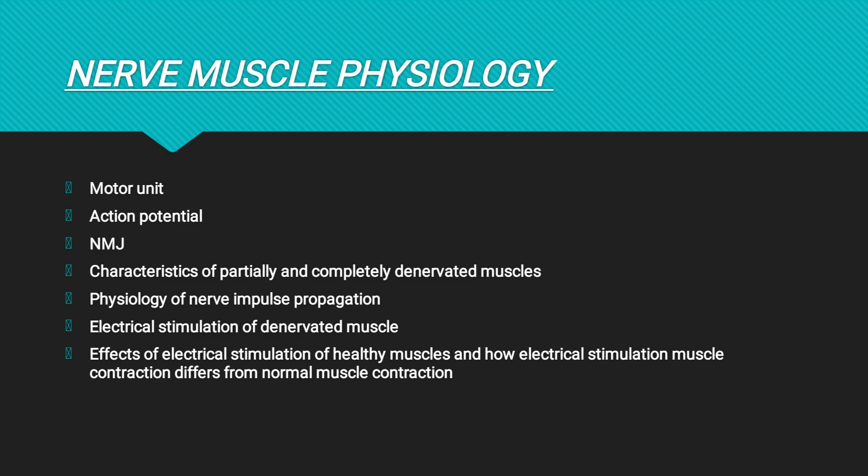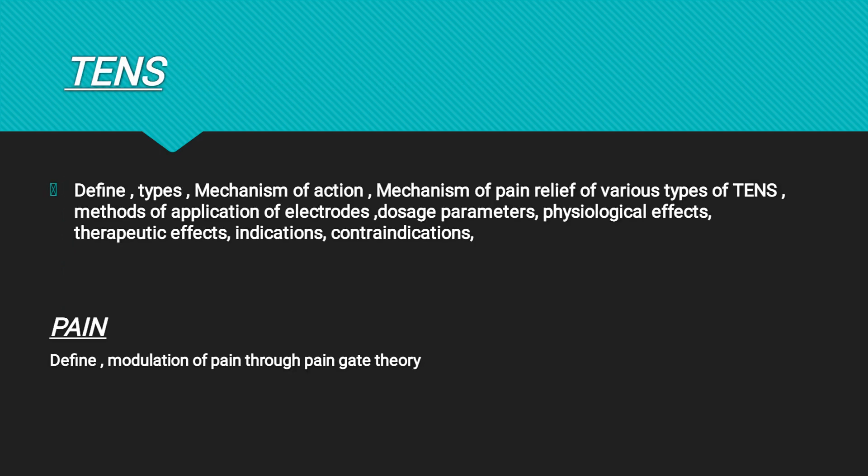We have questions from nerve muscle physiology. And then we have an important topic — TENS, that is transcutaneous electrical nerve stimulation. We have TENS mechanism of action, classify TENS with types, define contraindications, indications, physiological and therapeutic effects. As I said, these four things — indications, contraindications, physiological and therapeutic effects — cover about 80% of the topic once you learn them. So TENS is done.